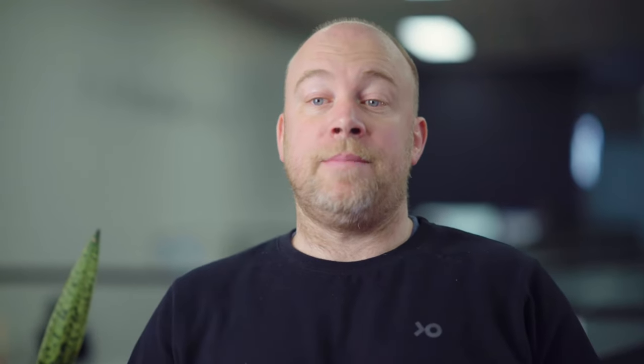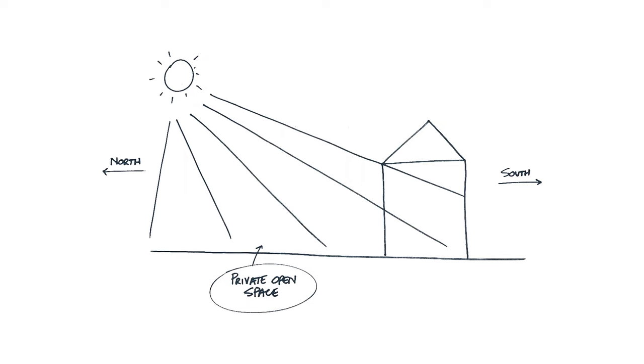There is a reason why north-facing private open space properties are popular and command a premium. They maximise the natural light into your living spaces where the light is most valuable. This orientation minimises the chance of your new design shadowing anyone else's northern solar access.